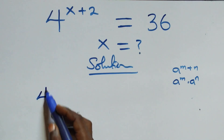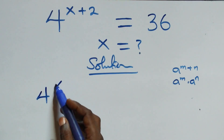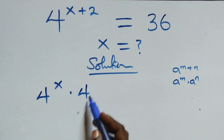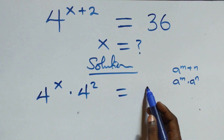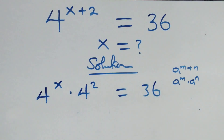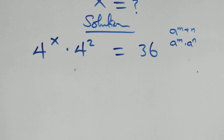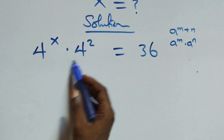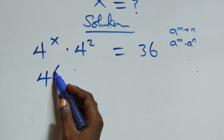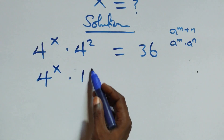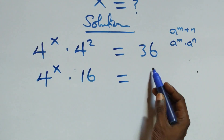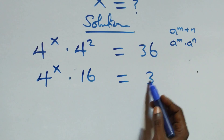What we have here becomes 4 raised to the power x times 4 squared equals 36. The next step, we can write this as 4 raised to the power x times 4 squared — that is 4 times 4 — as 16, equals 36.